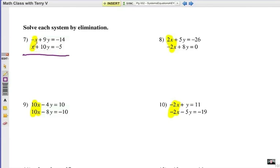Since these X's are opposite already, we are going to add those equations together. So those X's are eliminated. That gives me 19Y equals negative 19. If we divide each side by positive 19, Y would be negative 1. That is my first answer.